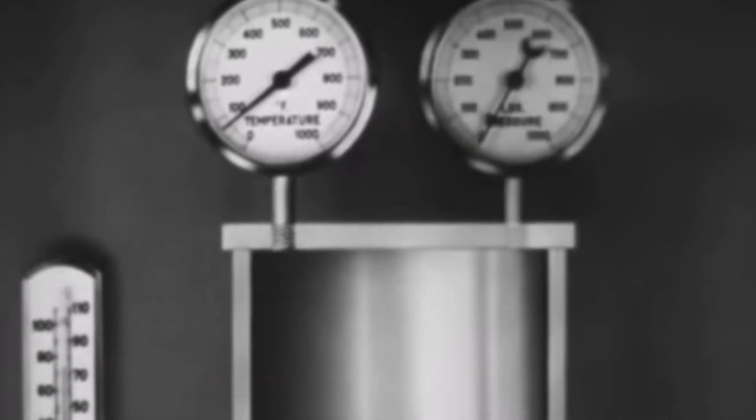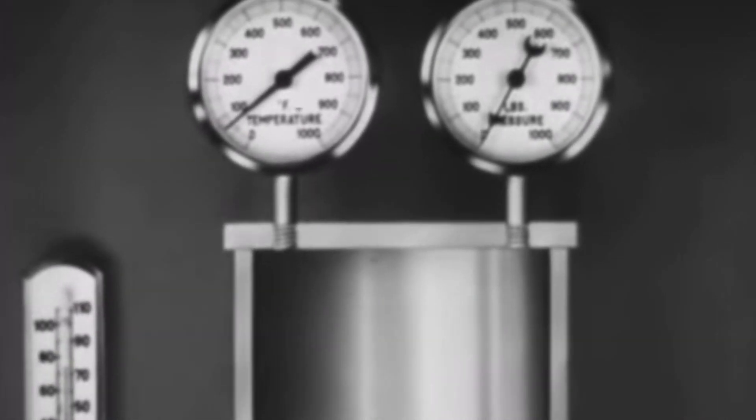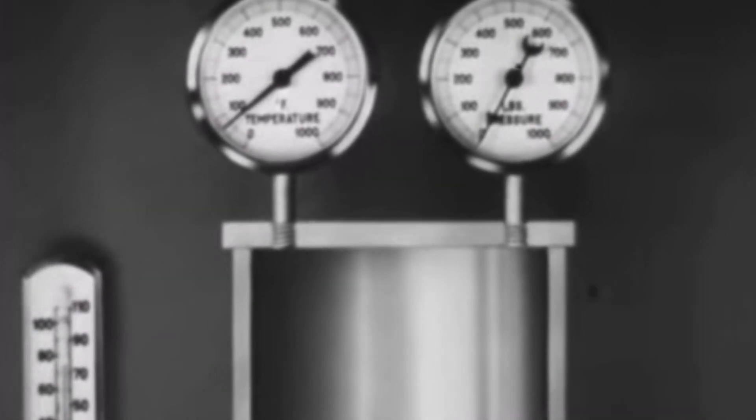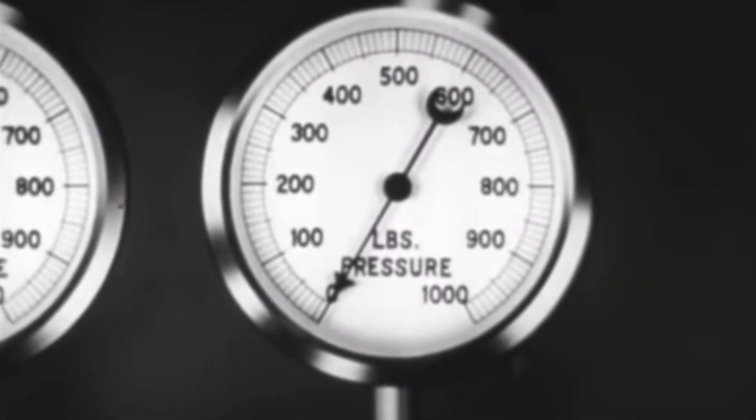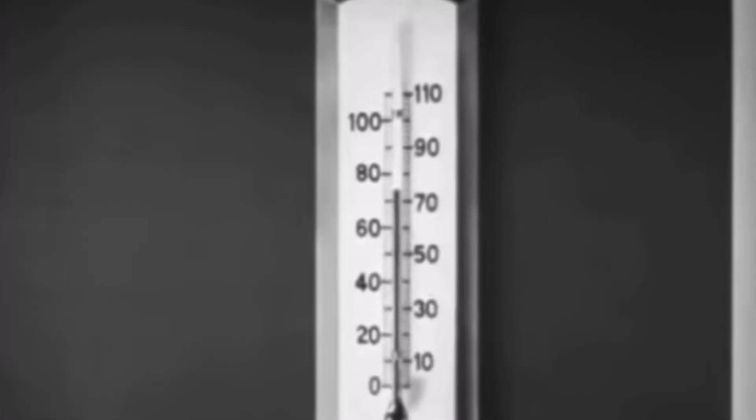Next, we add an instrument for measuring the air pressure in the cylinder in pounds per square inch. With the piston in the down position, the pressure gauge on our apparatus reads zero, and both thermometers are at room temperature, 74 degrees.